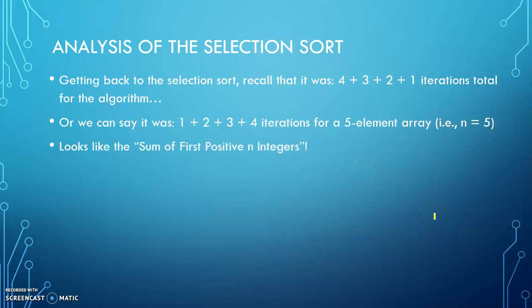So we can express the selection sort mathematically like this. If we want to shorten that, we would say the selection sort would look like this mathematically. So here's the thing, though, we're talking about big O.